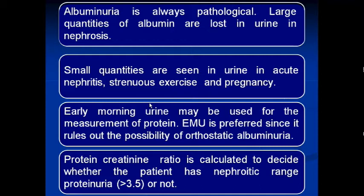Large quantities of albumin are lost in urine in nephrosis. Small quantities are seen in urine in acute nephritis, strenuous exercise, and pregnancy. Early morning urine may be used for the measurement of protein, since it rules out the possibility of orthostatic albuminuria.